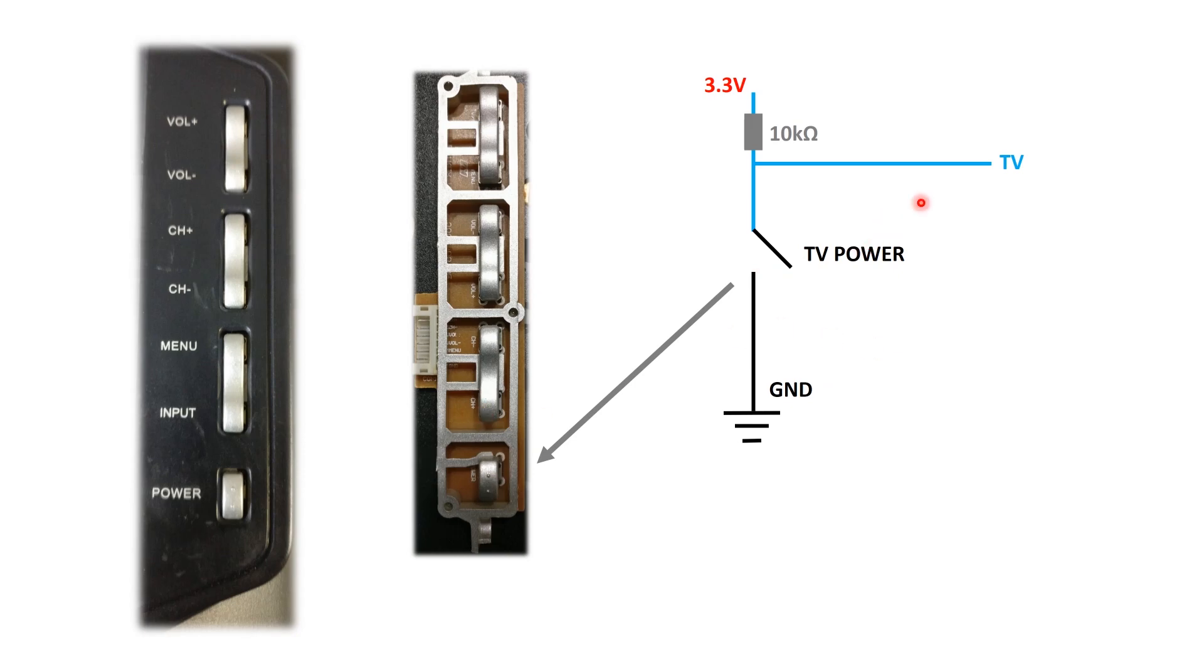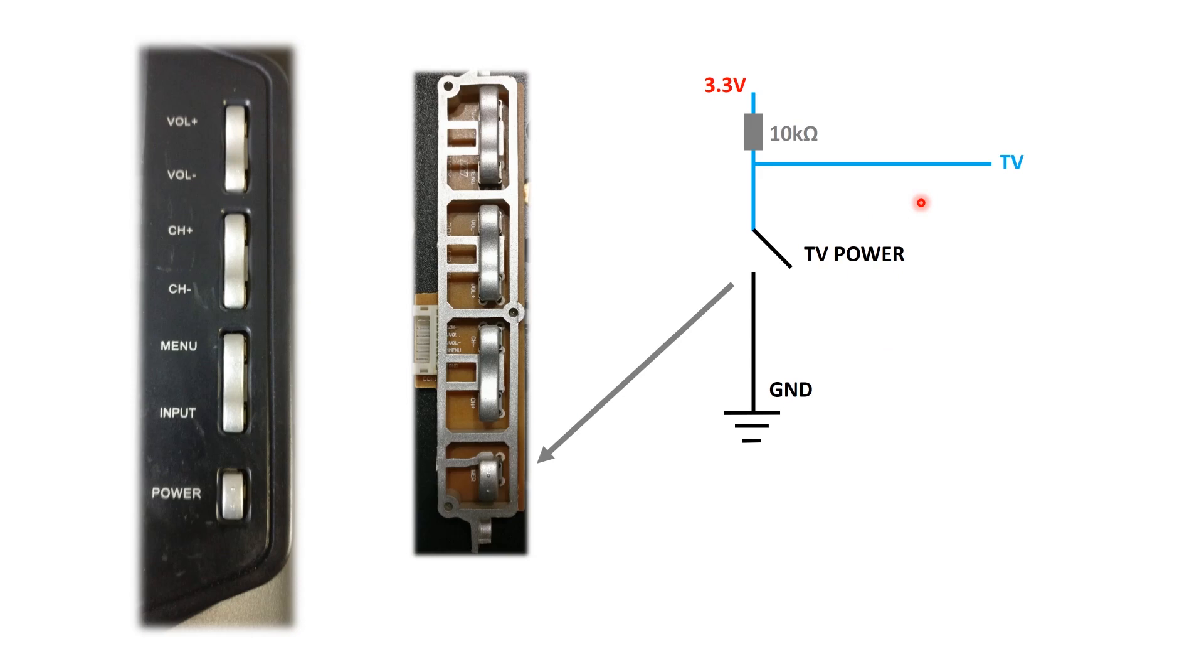So what we're going to do now is we're going to use ESP8266 to do this for us. In this case, I'm going to use a 2N2222 transistor and connect the base using 300 ohms to one of the pins in ESP8266.